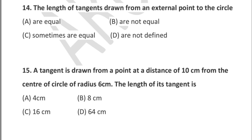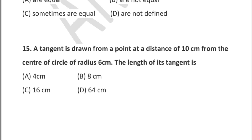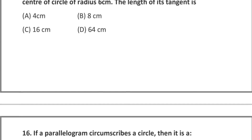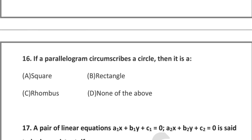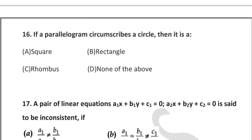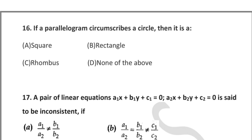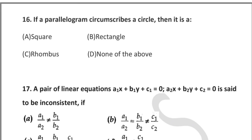Question 15: a tangent is drawn from a point at a distance of 10 cm from the center of a circle of radius 6 cm. Find the length of the tangent. Question 16: if a parallelogram circumscribes a circle, then it is a — square, rectangle, rhombus, or none of the above.